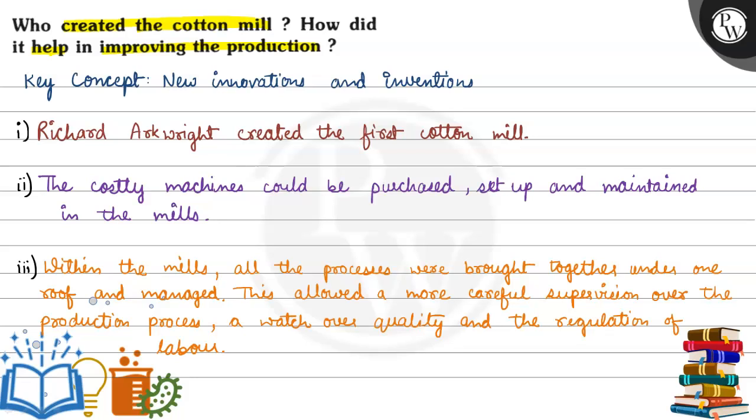Cotton mill, who created, who created and how did the production improve? Let's see the key concept. Key concept is new innovations and inventions. During industrialization, new innovations and inventions were rapidly used to boost the production procedure. Let's see our answer.